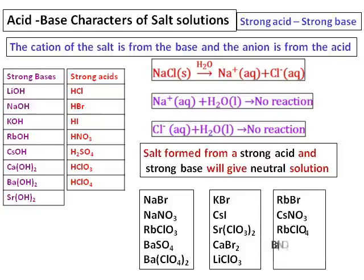For example, consider sodium bromide: Na is in the strong base table and Br is in the strong acid table, so it gives a neutral solution. Another example: combining the cation rubidium from the strong bases with ClO₄⁻ perchlorate gives rubidium perchlorate, RbClO₄, which will also give a neutral solution. Remember the tables — any combination of a cation from the strong base table and an anion from the strong acid table will give a neutral solution.